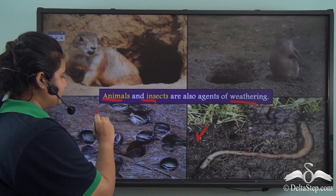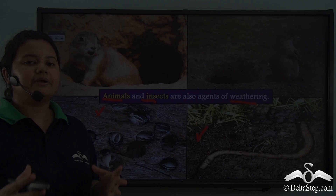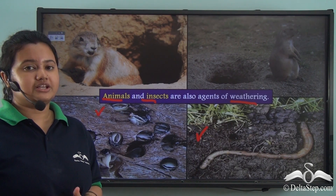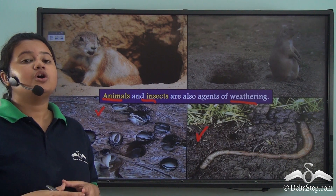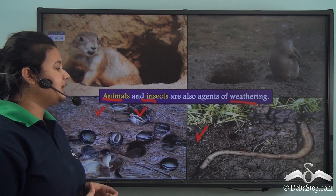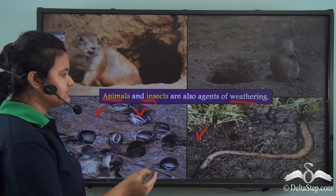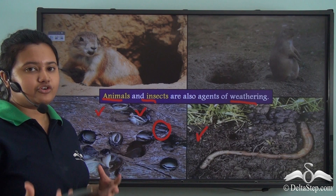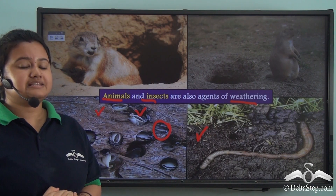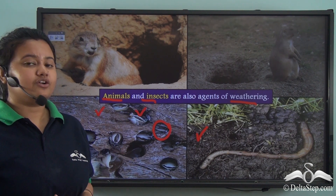Now look at this picture. This picture shows piddocks. Piddocks live near the shore and they rotate their shells to stay protected from ocean waves. These shells have sharp edges, so when they rotate they cause depressions or hollows in soft rocks like limestone. This is how these animals and insects play an active role in weathering of rocks.